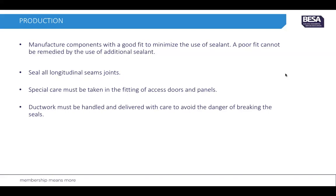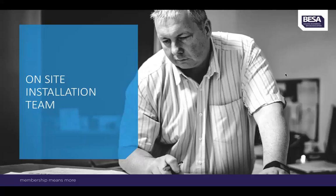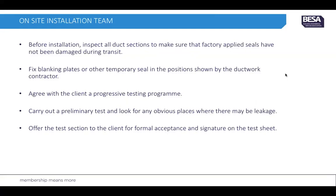The ductwork must be handled and delivered with care to avoid any danger of breaking the seals during transportation. The on-site installation team must, before installation, inspect all duct sections and make sure that factory-applied seals have not been damaged during transit or delivery. Blanking plates or other temporary seals in the positions shown on the ductwork by the ductwork contractor must be installed.